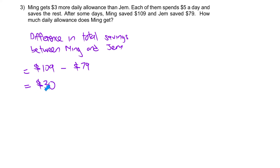Think about it — how do they get to the difference of $30? It must have been built up day by day consistently to reach this amount. As I mentioned earlier, every single day Ming saves $3 more because he's given $3 more and they spend the same amount. Therefore, Ming has to save this additional $3. Every single day, the savings gap is $3 more — and that gap is going to widen.